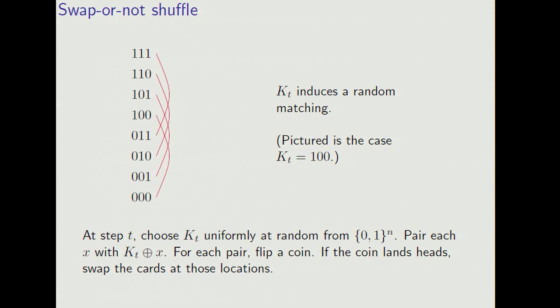So notice that kt induces a random matching. Here I've drawn the matching associated with kt equals 1, 0, 0. The way the shuffle works is for each edge in the matching, you flip a coin. If the coin lands heads, you swap the cards at the endpoints.